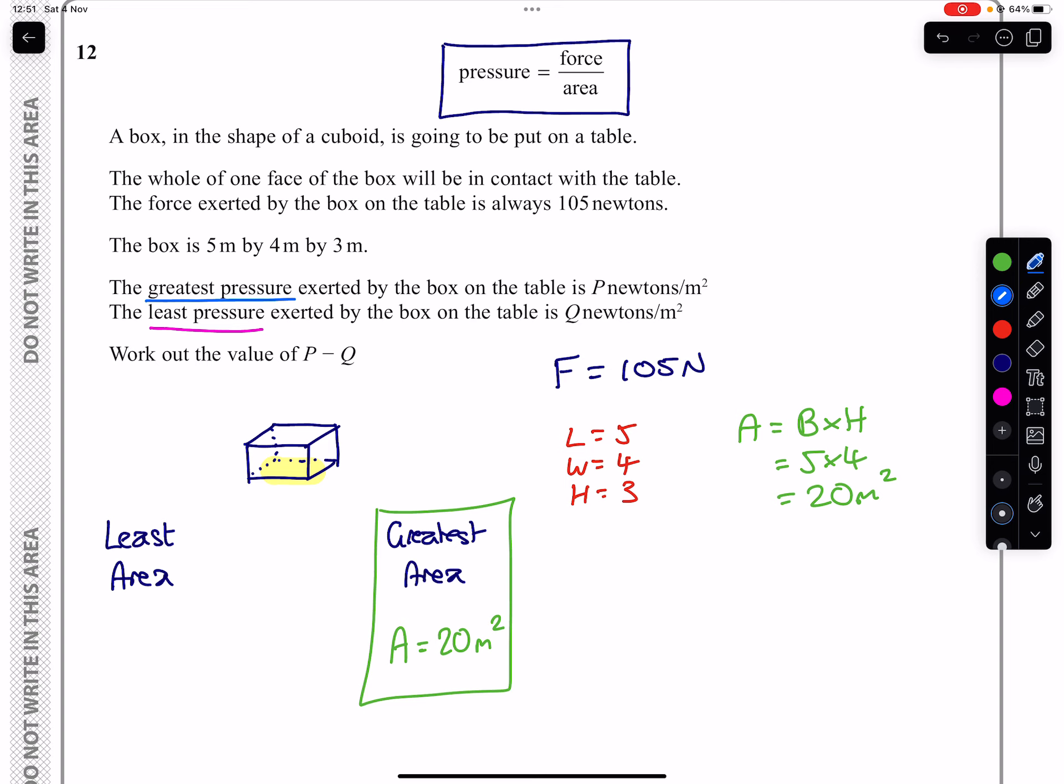And if we use 3 times 4 for the area, we will get the smallest, which is 12 meters squared. So the least area is 12.